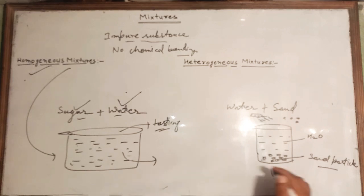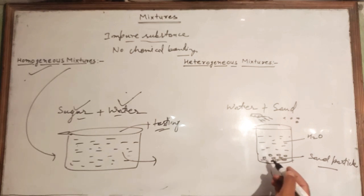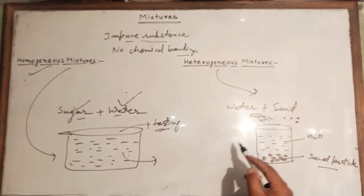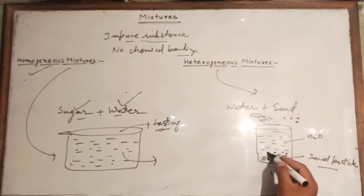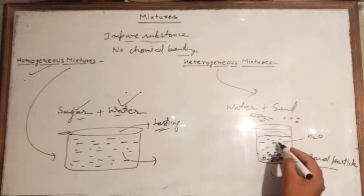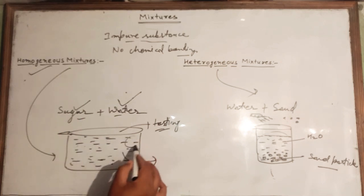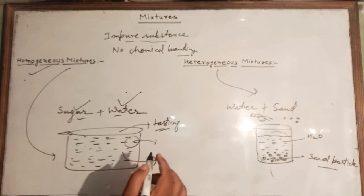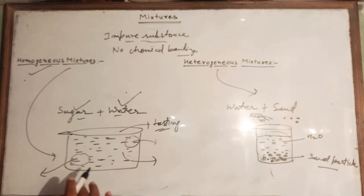You can easily see the sand particles at the bottom and the water above. This kind of mixture, where you can easily recognize the constituents — whether elements or compounds — is called a heterogeneous mixture. There is no uniform composition throughout its volume: the density of sand particles is more at the bottom and less elsewhere. In a homogeneous mixture, the composition is uniform — the sweetness will be the same throughout.